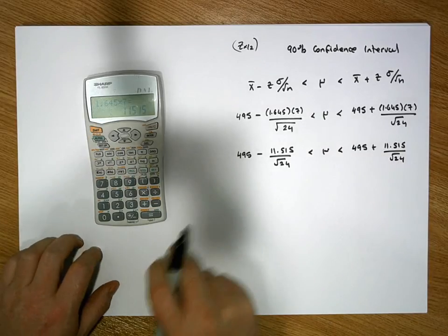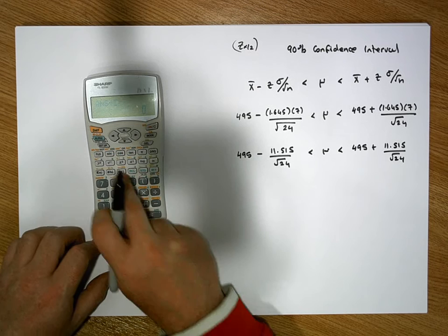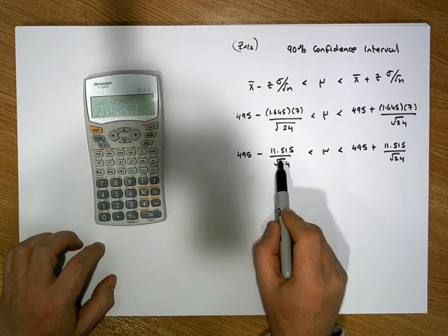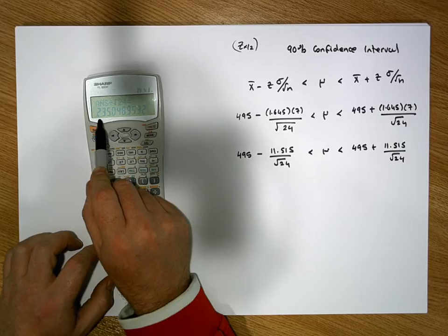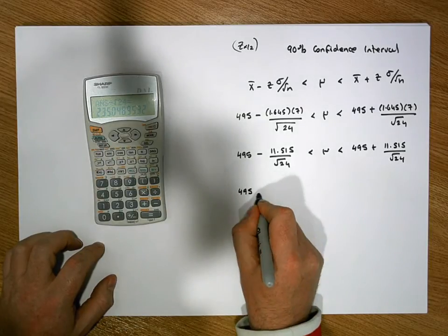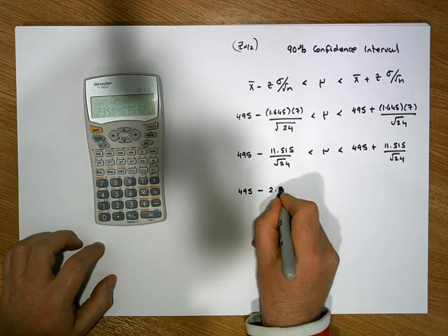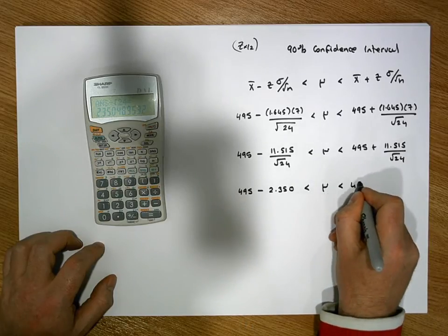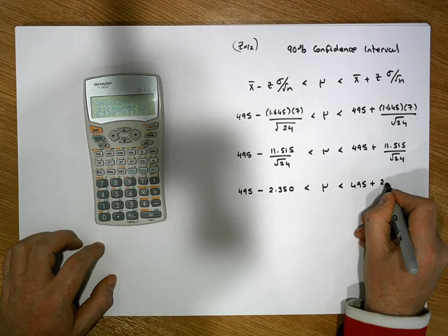Let's do our division. I'm going to divide this by the square root of 24. That gives us a value of, let's go to three decimal places, it gives us a value of 2.350. So this becomes 495 minus 2.350, must be less than mu, must be less than 495 plus 2.350.